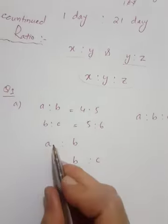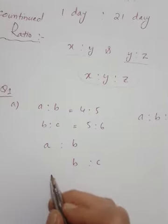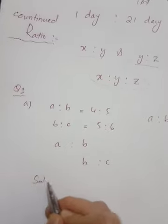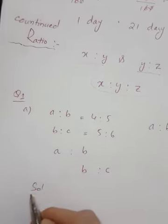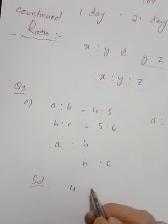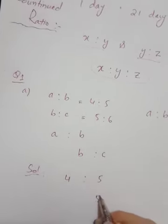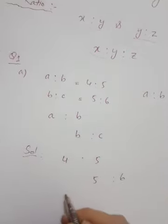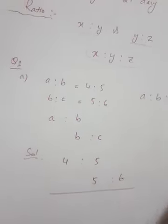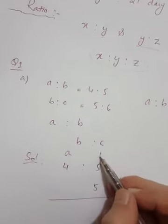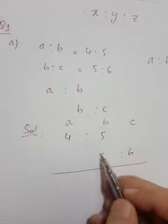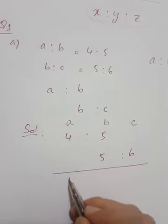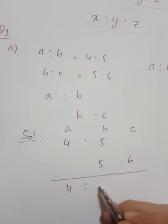The solution begins by writing: 4 ratio 5 and then 5 ratio 6. Now when any two numbers are the same - here five is the same - we can simply write them together: four, then five, then six. That's your answer.